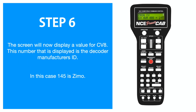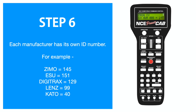This will then display a value for CV8. This number is the manufacturer ID of the decoder — each manufacturer has its own unique ID. In this example, 145 means the decoder was manufactured by Zimo. I've listed some of the other common manufacturers and their IDs on screen here.